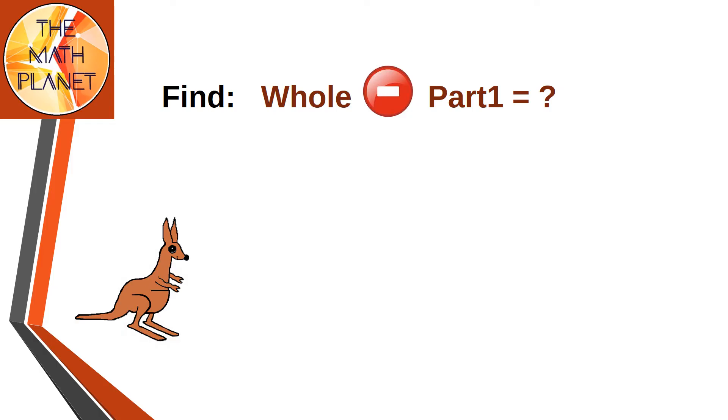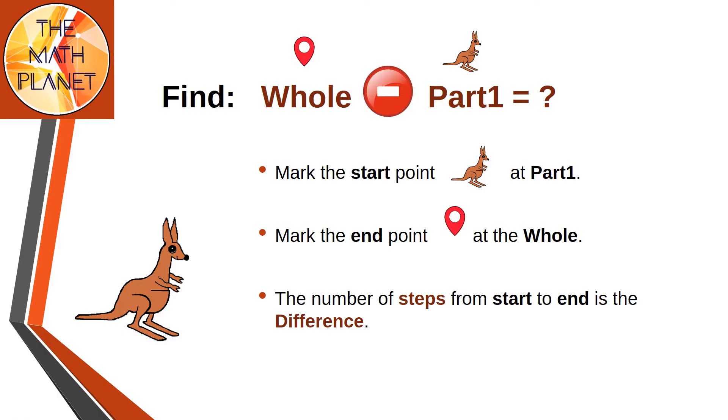How can I solve this subtraction equation by counting on? First, I will mark the start point at part 1, which is the lesser number in the subtraction equation. Next, I will mark the end point at the whole, which is the greater number in the subtraction equation. Finally, I will just count the number of steps from start to end, and this will be the answer or the difference.